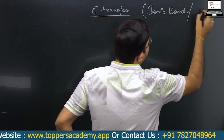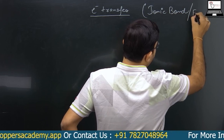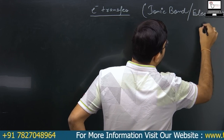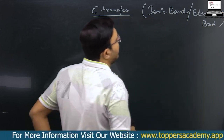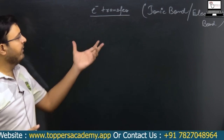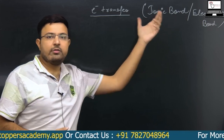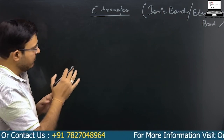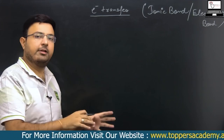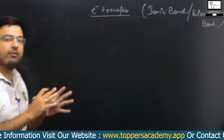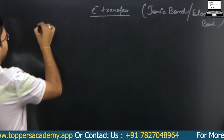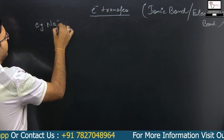The type of bond formed by the electron transfer method is the ionic bond — also called the electrostatic bond, a term coined by Kossel and Lewis. The term 'ionic bond' was later coined by Michael Faraday. We will take the example of NaCl.